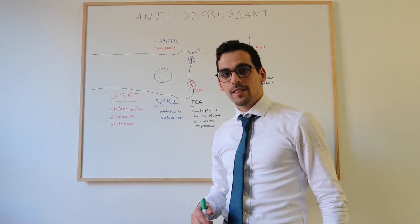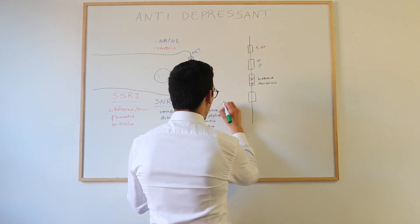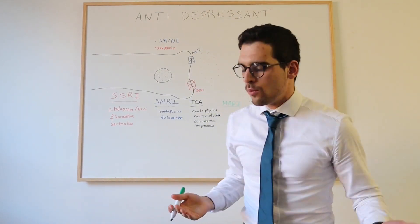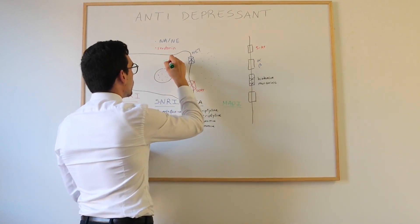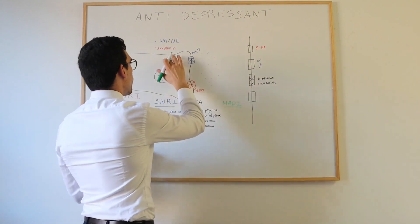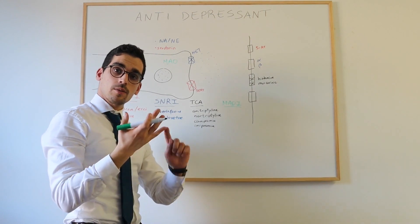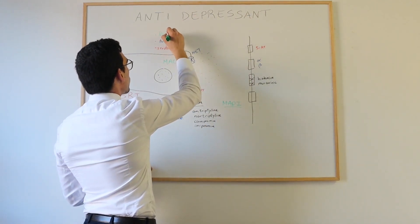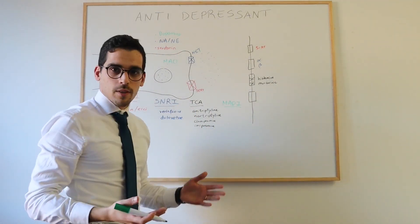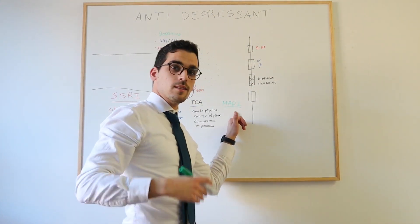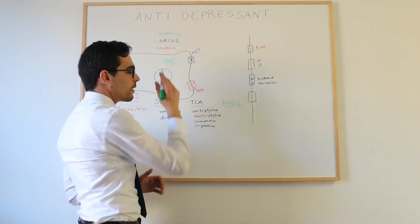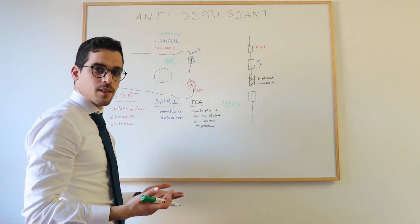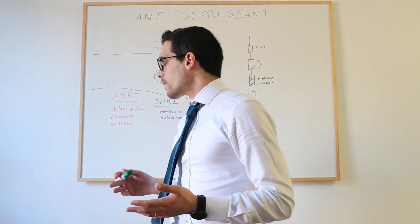The fourth class is the monoamine oxidase inhibitors, or MAOIs. The enzyme monoamine oxidase is responsible for the breakdown of serotonin, noradrenaline, and dopamine — it metabolizes them so they lose their action. MAOIs block this enzyme, so it doesn't break down our monoamines — serotonin, noradrenaline, and dopamine remain elevated to tackle depression.